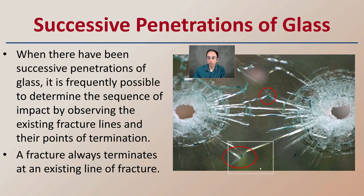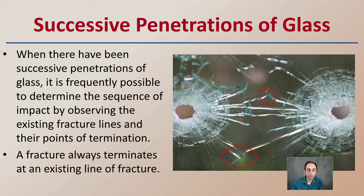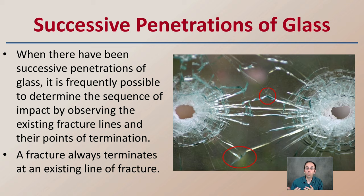With successive penetrations of glass, it's frequently possible to determine the sequence of impact by observing the existing fracture lines and their points of termination. A fracture always terminates at an existing line of fracture. This is important when there are multiple bullet holes in a piece of glass — trying to determine which was fired first, which was the first point of entry, which was second or third, and so on. Determining that order can then help establish, for example in a room, where a person may have been placed and which bullet caused a fatal wound.